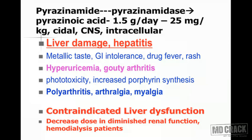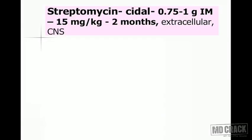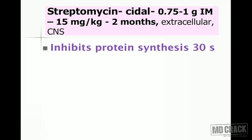Next is streptomycin, an aminoglycoside which is bactericidal. The standard dose is 750 mg to 1 gram intramuscularly, or 15 mg/kg body weight, given for the initial two months. Streptomycin has extracellular action with limited intracellular penetration, but achieves fairly good concentration in the CNS.